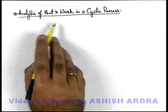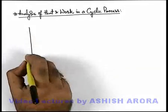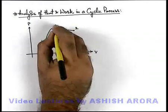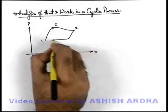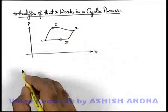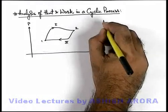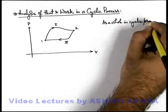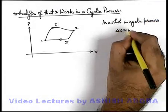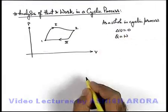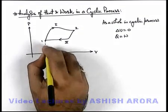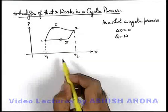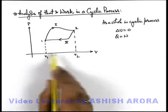Let us analyze the heat and work involved in a cyclic process. If we just draw the indicator diagram for a typical cyclic process — say from state 1 to 2 the gas is carried out under process 1, and by following process 2 it comes back to the initial state. Say gas is taken from a volume V1 to volume V2. The area under curve 1 will be the total amount of work which is done by the gas in expansion from V1 to V2.